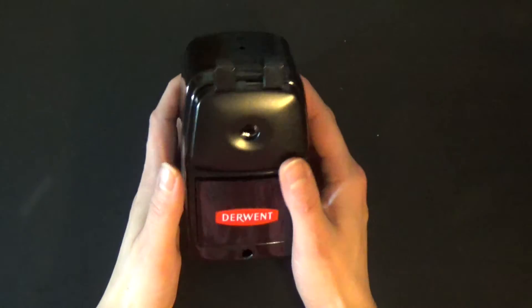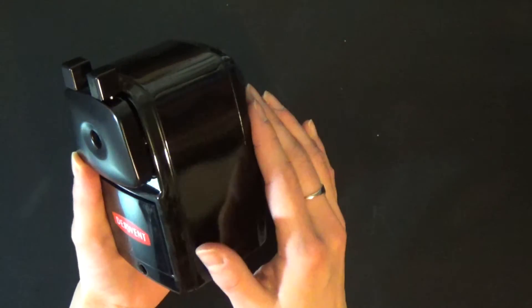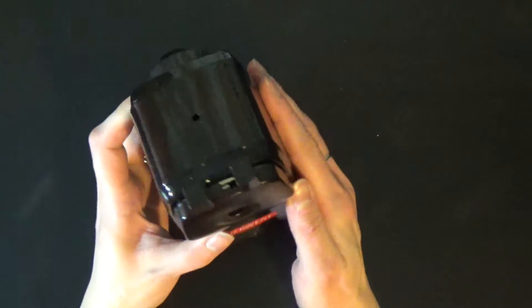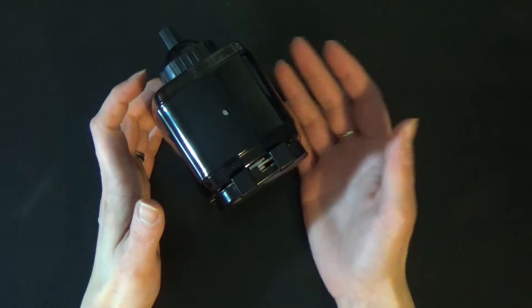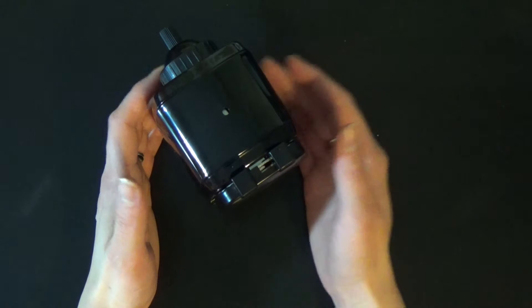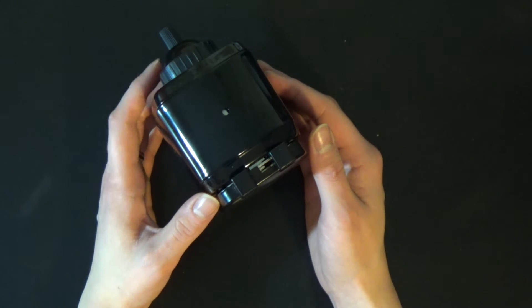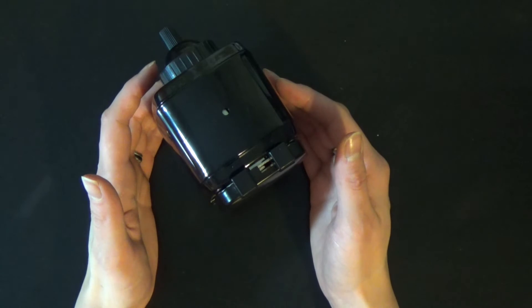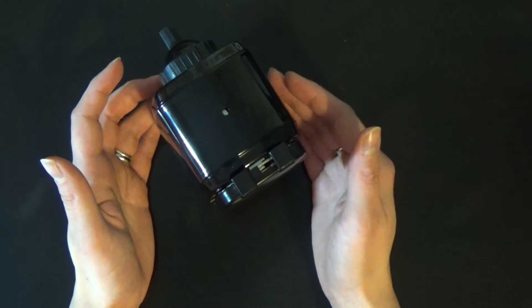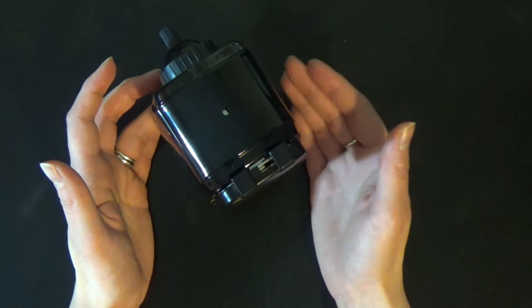For sharpeners I have two that I like to use. The first is the one that I now use at my desk. This is the Derwent Super Point manual sharpener. It's what's called a helical sharpener, just in the way that it sharpens. It's just to do with the type of blade that is used to sharpen the pencil. It produces a really nice long fine point and hopefully it should keep sharp for longer as well.